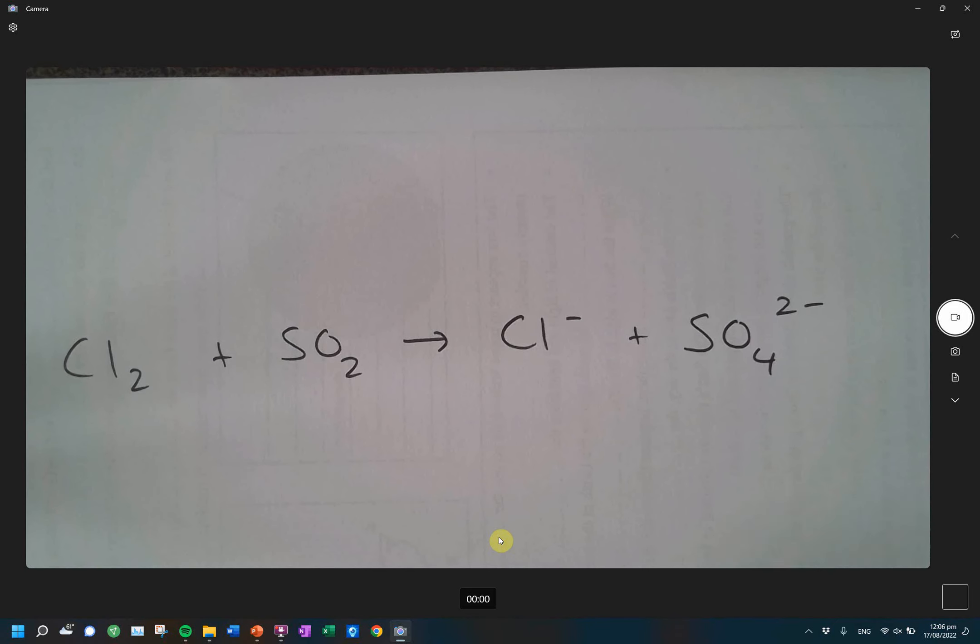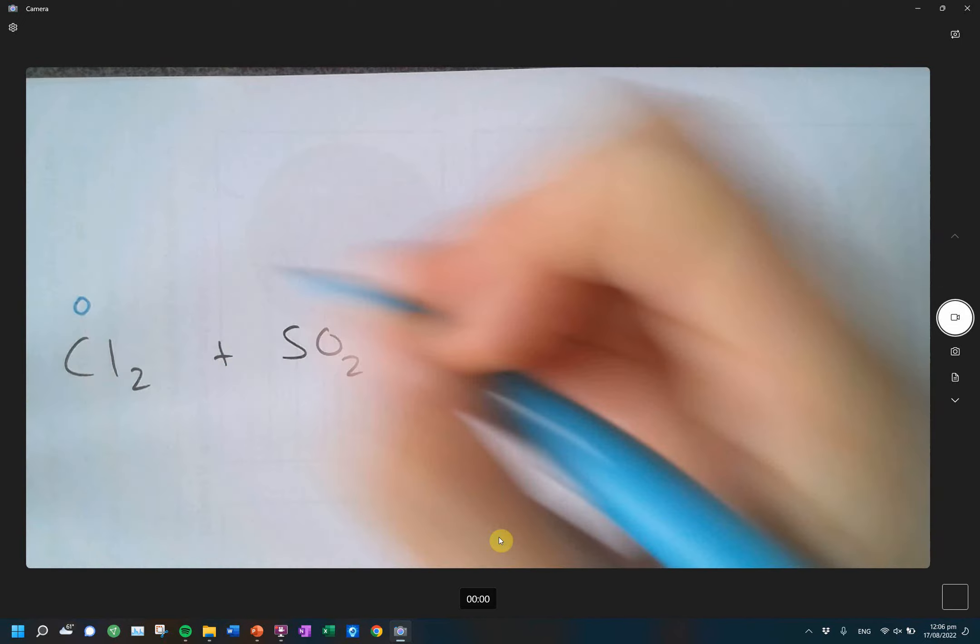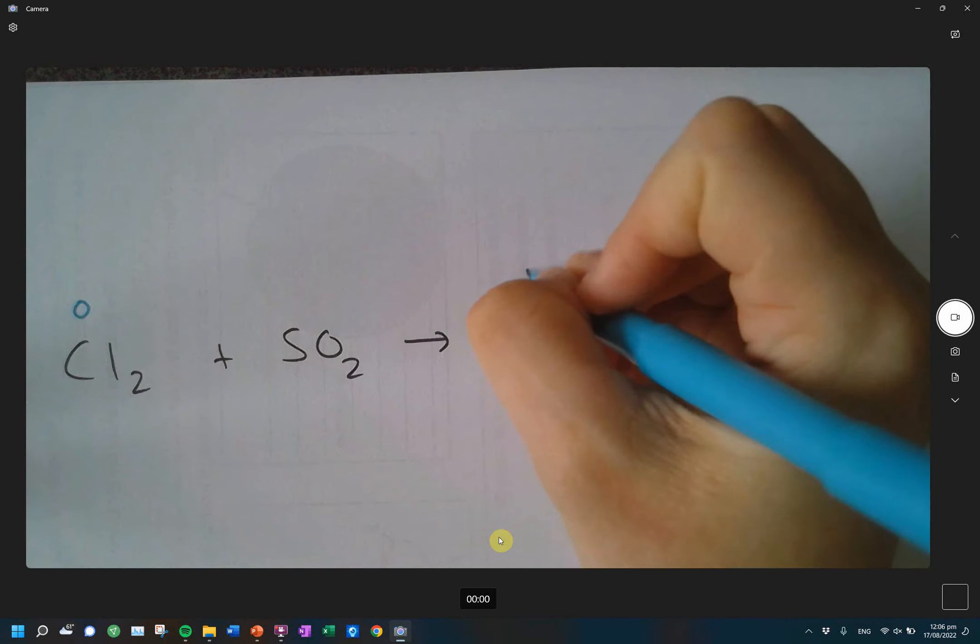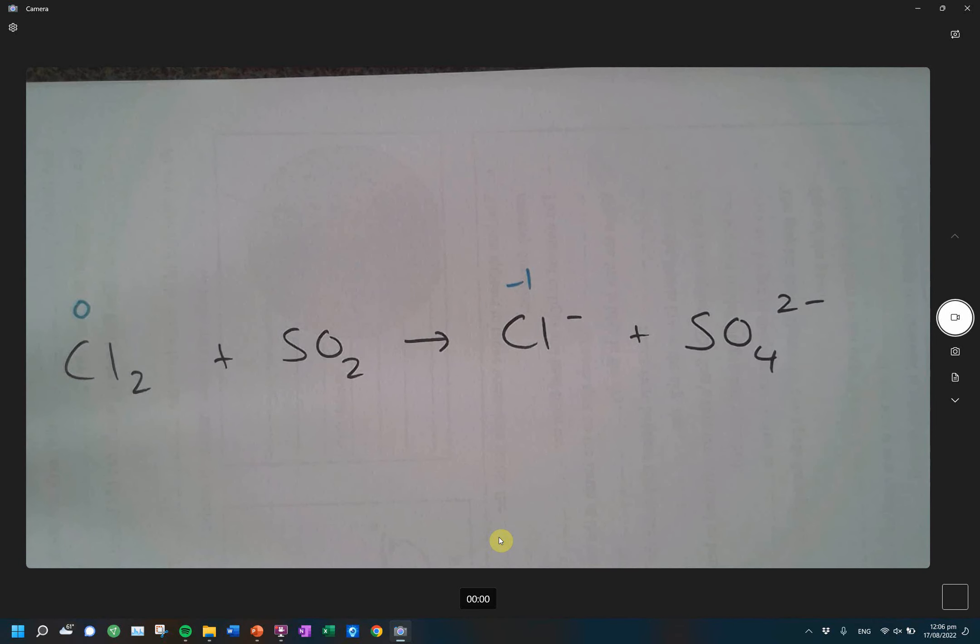So the first thing we're looking at is our chlorine gas. This one is an element, so its oxidation number starts at zero. And then I'm checking the chloride now. So chloride has become an ion and I see that's a negative one monatomic ion. So its oxidation number is negative one. So that's my first one done.